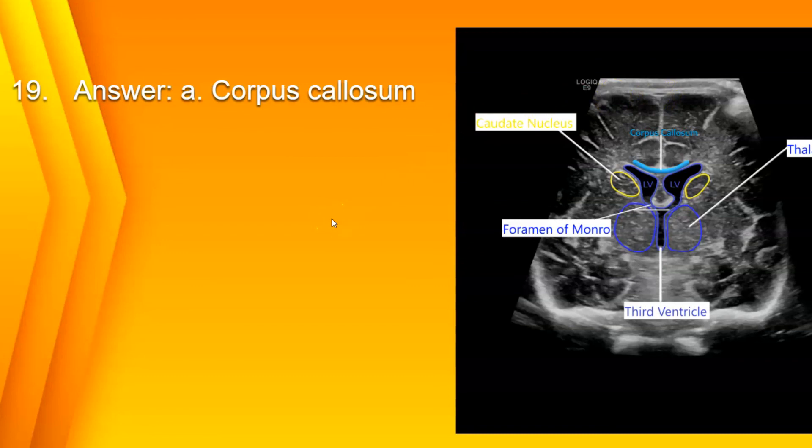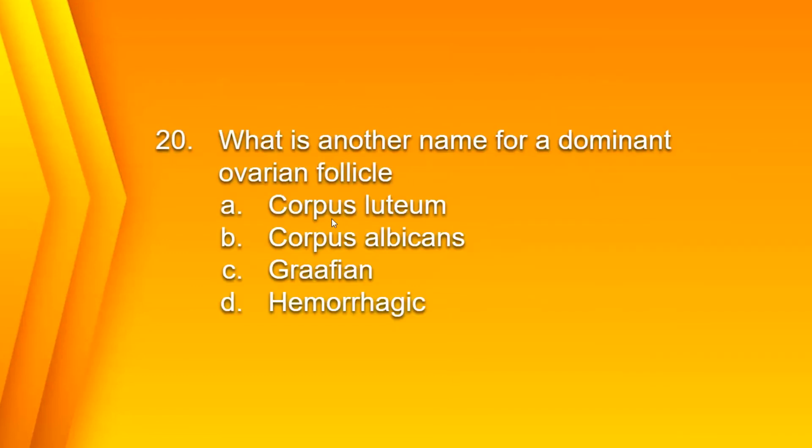Number 20: What is another name for a dominant ovarian follicle? A. Corpus luteum, B. Corpus albicans, C. Graafian, or D. Hemorrhagic? The answer is C. Graafian follicle.